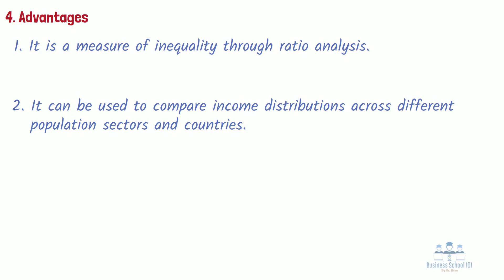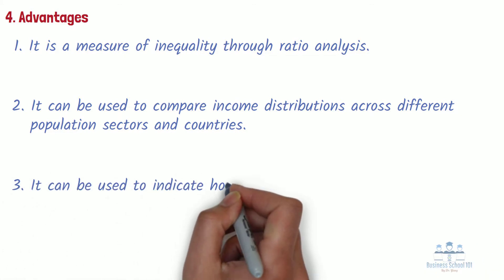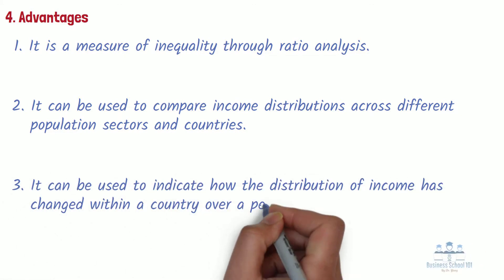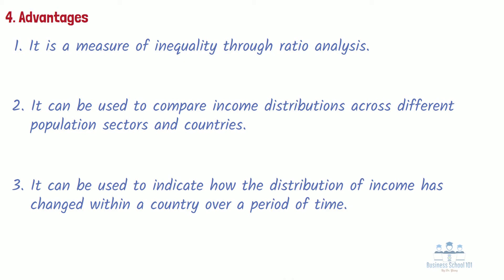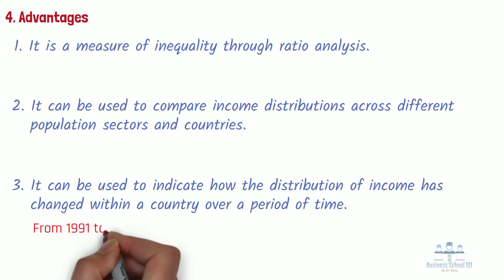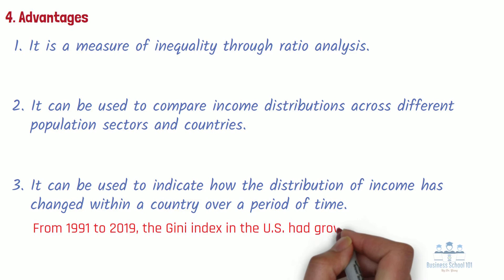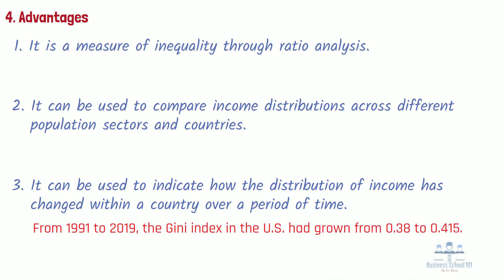Number 3: It can be used to indicate how the distribution of income has changed within a country over a period of time, so it is possible to see if inequality is increasing or decreasing. For example, from 1991 to 2019, the Gini index in the US had grown from 0.38 to 0.415, meaning the income gap between the rich and the poor is getting bigger in the United States.